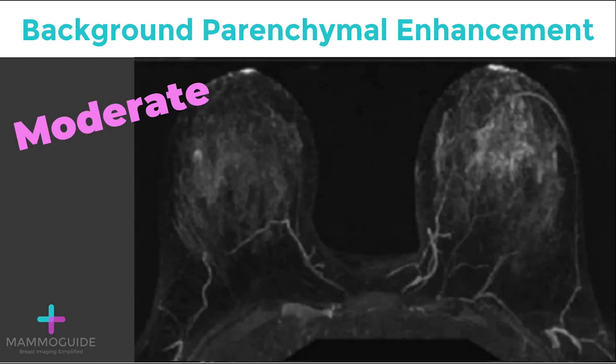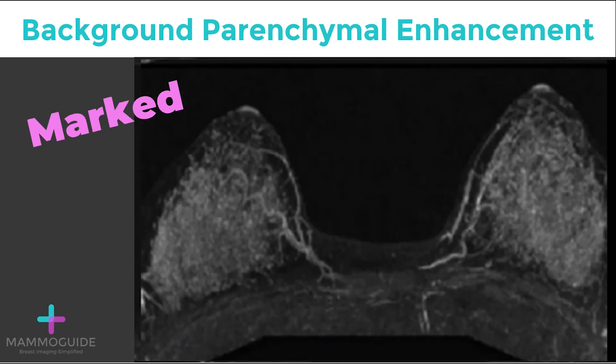The third category is moderate, where 50% to 75% of the breast parenchyma enhances. And lastly, marked background parenchymal enhancement, where greater than 75% of the background parenchyma enhances.